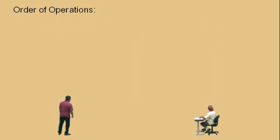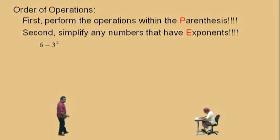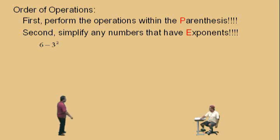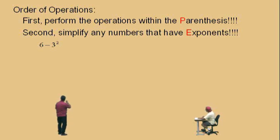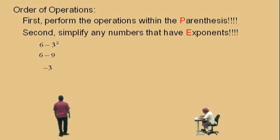Now we've done parentheses, so we're moving to the next one — the second step. The second thing to look for is exponents. Simplify any numbers that have exponents. Here's our example: 6 subtract 3 squared. A lot of people want to do 6 subtract 3 first — well, if you do that, you'll be coming back next semester to repeat the class. Remember, order of operations: you have to do exponents next. What's 3 squared, Charlie? Nine. So we have 6 subtract 9. What is 6 subtract 9? Negative 3. Very nice.